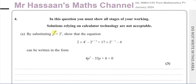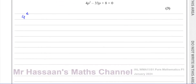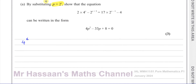They've told us what substitution to make, so anywhere we see 2 to the power of x we must replace it with p. The problem is we don't see 2 to the power of x on its own anywhere. We see 4 to the power of x, we see 2 to the power of x plus 3, and we see 2 to the power of x minus 1. So we can rewrite these using the laws of indices in terms of 2 to the power of x — that's our objective here.